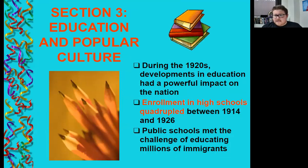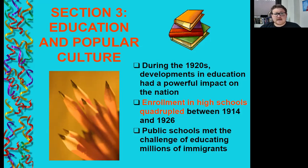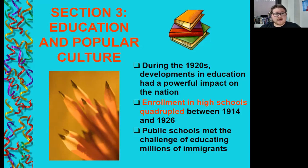During the 1920s, developments in education had a powerful impact on the country. Enrollment in high schools quadrupled between 1914 and 1926, and public schools met the challenge of educating millions of immigrants. This quadrupled enrollment actually changes in the 1930s because of the Great Depression, but this is the emergence of what public school can do for people. The idea that a public institution is there for all of us to learn, grow, and be nurtured is quite a phenomenon.